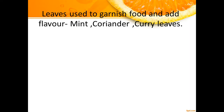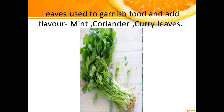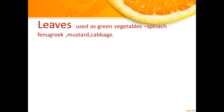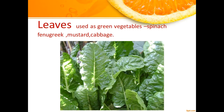Leaves like mint, coriander, and curry leaves are used to garnish our food and add flavor. There are also some leaves of plants which we often use as green vegetables and cook in our kitchen, like spinach.